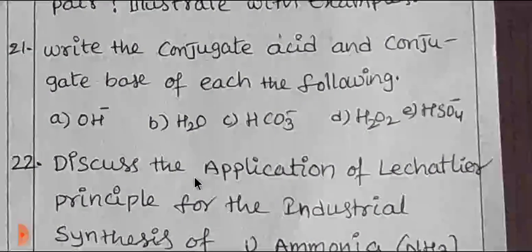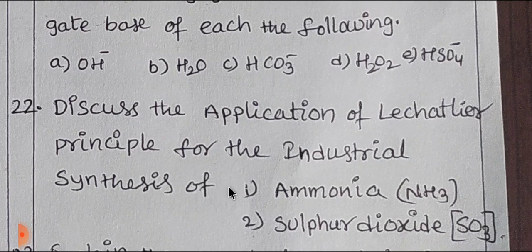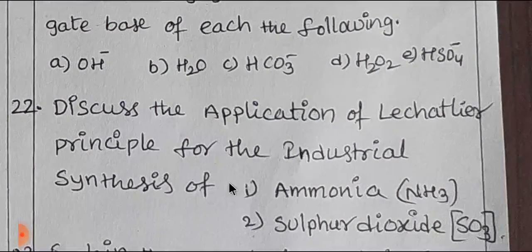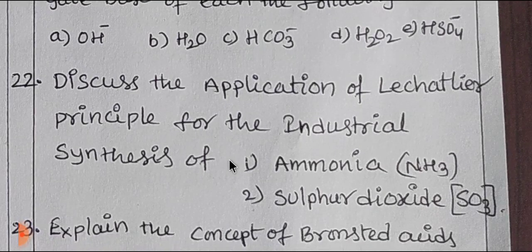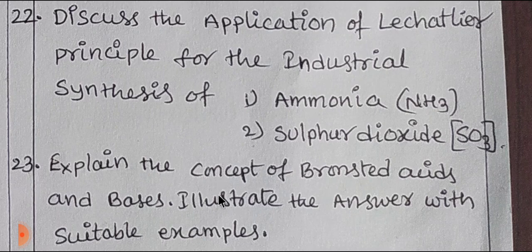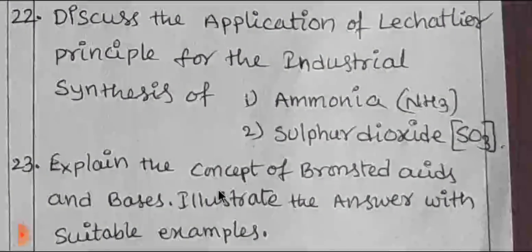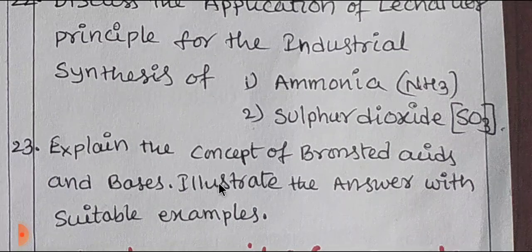The 22nd topic is Le Chatelier's principle. You have to write it covering both the first part and the second part. You need to use the amino acid examples and explain the same. You also have to write the types of amino acids. This topic is called Bronsted Acid and Base. You will explain the concept of conjugate acid-base pairs under Bronsted Acid-Base theory.